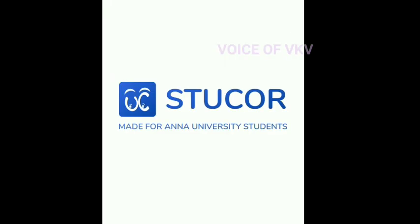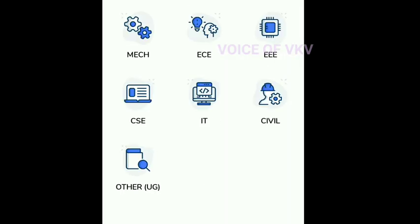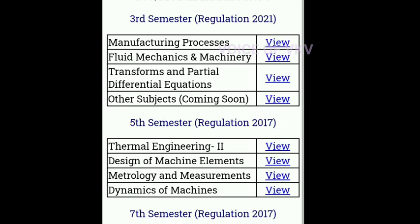If you want to download the Stooker app, you can use it for news and results. In the Stooker app, you can access notes and question papers. Click on the department — for example, if you want to choose Mechanical, you can click notes for the third semester Regulation 2021 or 5th semester 2017.